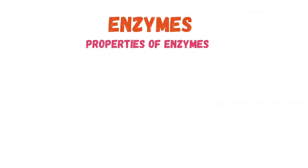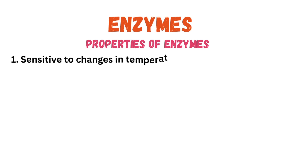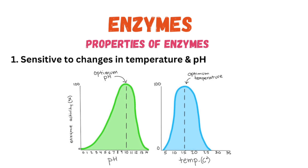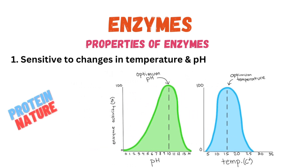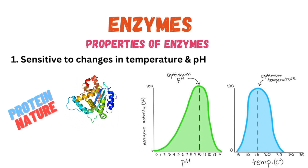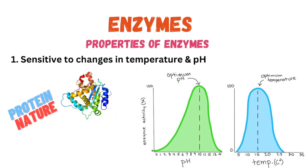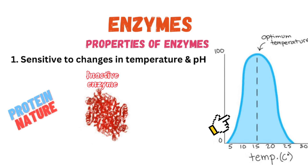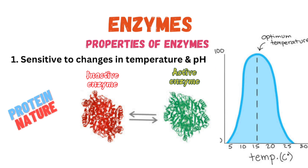Moving on to the properties of enzymes. Number one: enzymes are sensitive to changes in temperature and pH. Changing the temperature or pH will affect the enzymes because enzymes are made from protein, and proteins are always affected by changes in temperature and pH. At low temperatures, enzymes are usually inactive.